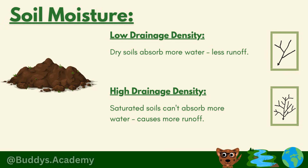In terms of soil moisture: for low drainage density you need dry soils, because dry soils can absorb more water since the pores are empty — leading to less runoff. For high drainage density you need saturated soils that are already full of water. Think of a soaked sponge — it's full and can't absorb any more, so water just runs off easily, increasing stream formation.